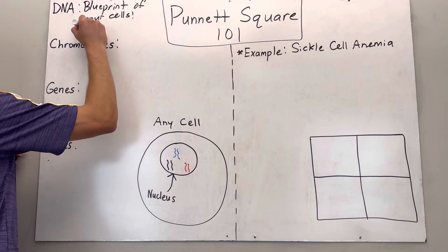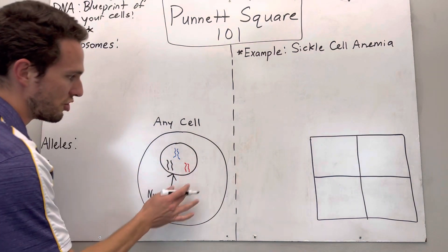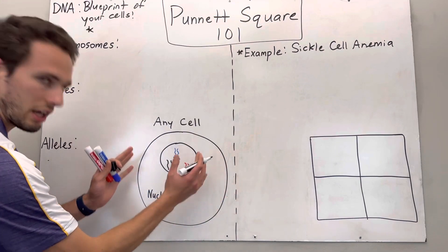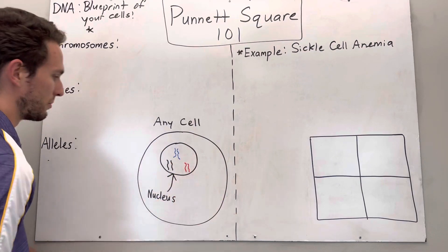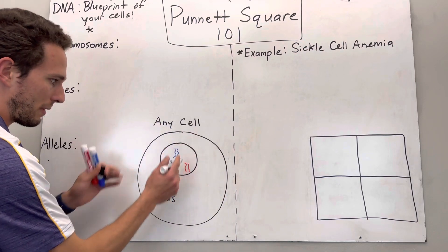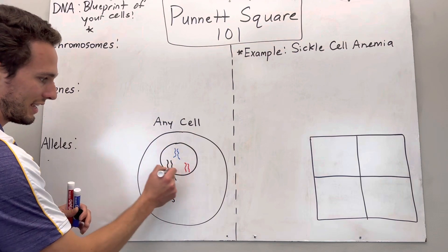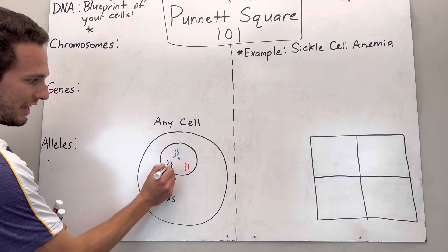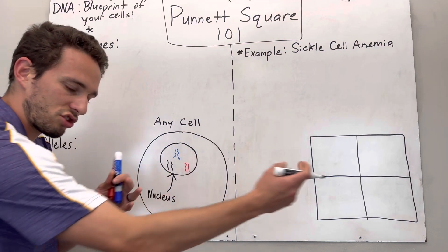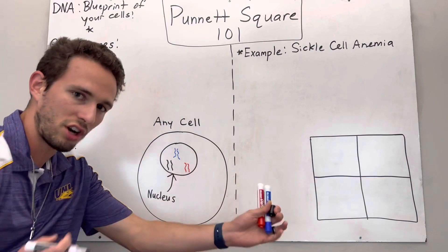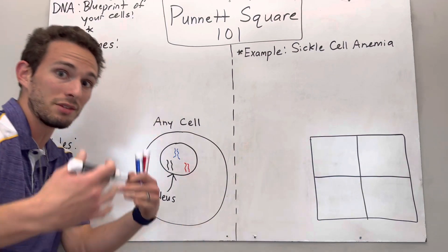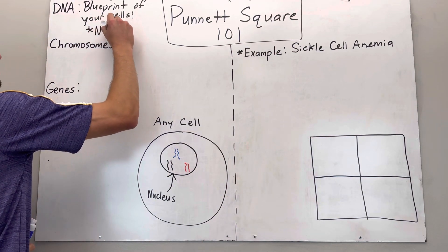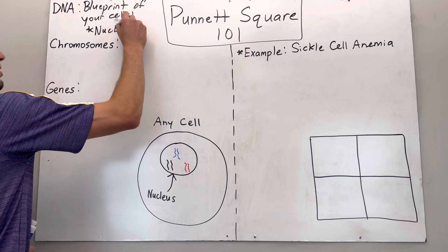This DNA is found in the nucleus of your cells. So if this is any cell of your body — besides your red blood cells — any cell of your body will contain a nucleus that will contain DNA, which are these long, stringy structures that are literally the blueprints.